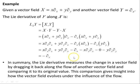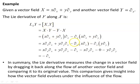In summary, the Lie derivative measures the change in a vector field Y by dragging it back along the flow of another vector field X and comparing it to its original value at P — looking for the difference between its original value and the dragged-back vector from a later time. This comparison gives insight into how the vector field evolves under the influence of the flow. I hope this is useful. The calculations which motivate this choice of the commutator will appear in the next video, which is already in the playlist. Thank you very much for watching, and I'll see you in the next video.